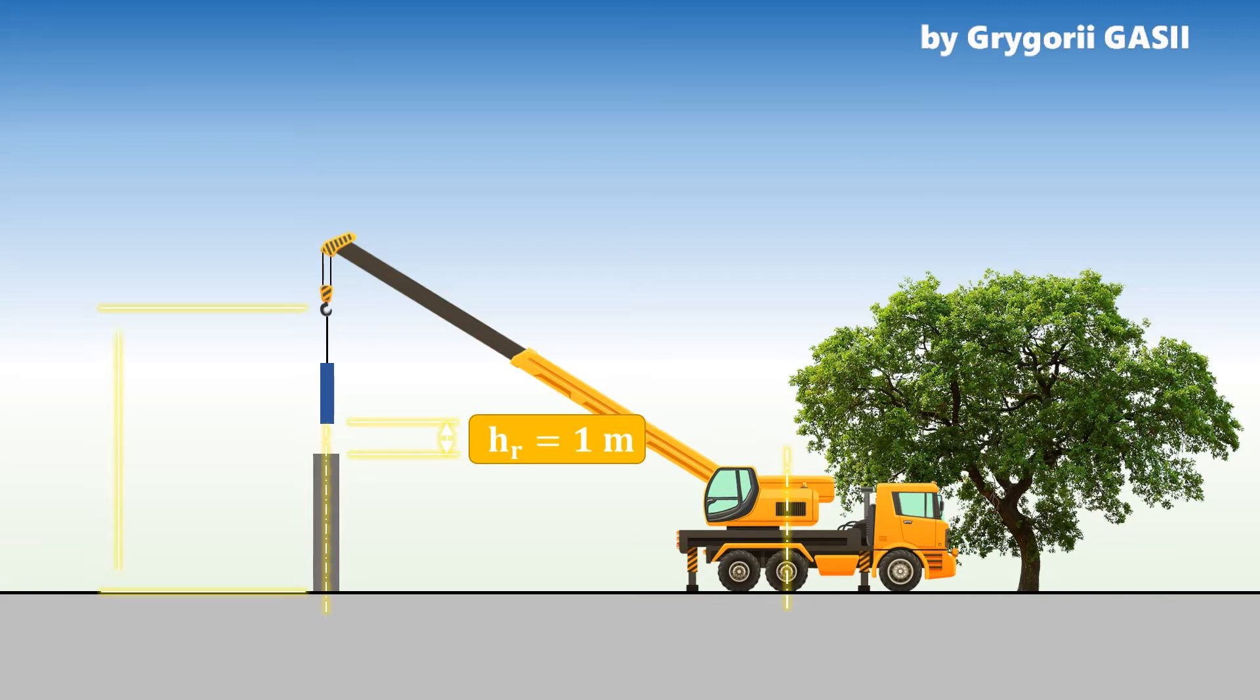The first parameter to be determined is the lifting height. Lifting height consists of the level of the existing structure and safe reserve of at least one meter.